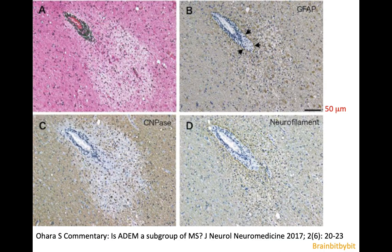ADEM and MS do not only differ in presentation — monophasic versus relapsing-remitting, dissemination in space and time — and in the location of the lesions, but also on histology. In multiple sclerosis, the demyelination is confluent, whereas in ADEM it's more perivascular, perivenous, as you can see on these images.